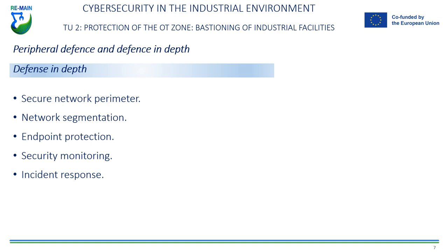In the industrial environment, defense in depth is a key strategy to protect critical systems and equipment used in production and manufacturing. These systems can include process controllers, sensors, supervisory control and data acquisition (SCADA) systems, and other network devices that are critical to plant operation.